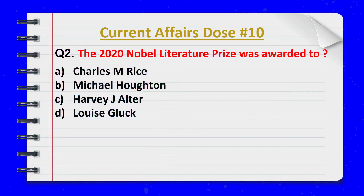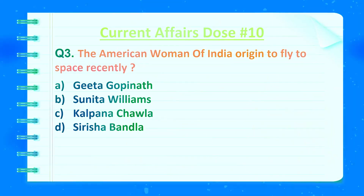Question 2. The 2020 Nobel Literature Prize was awarded to whom? Correct answer: option number D — Louise Glück.